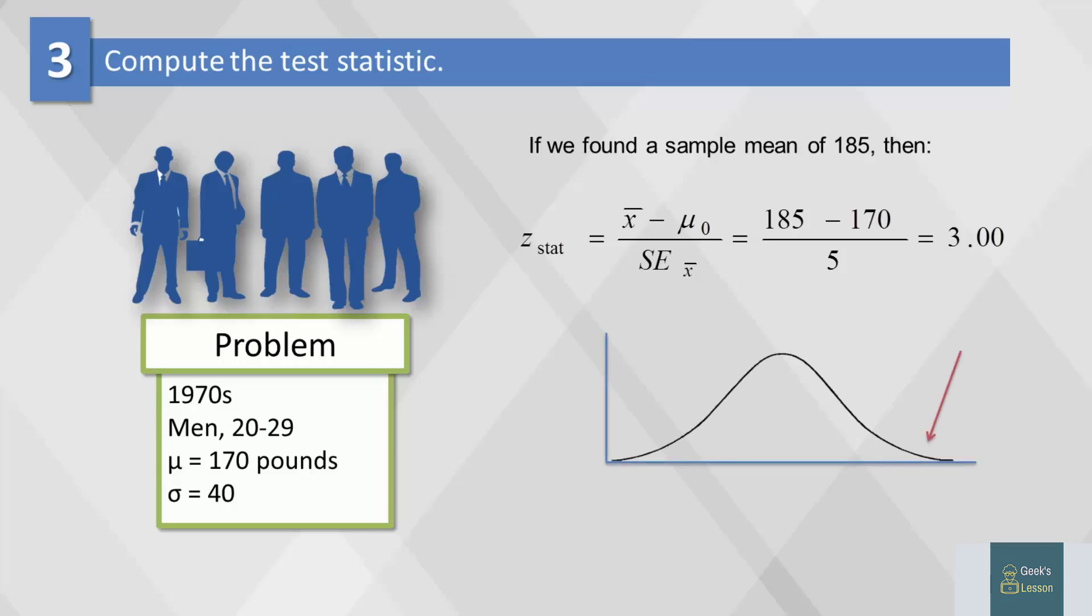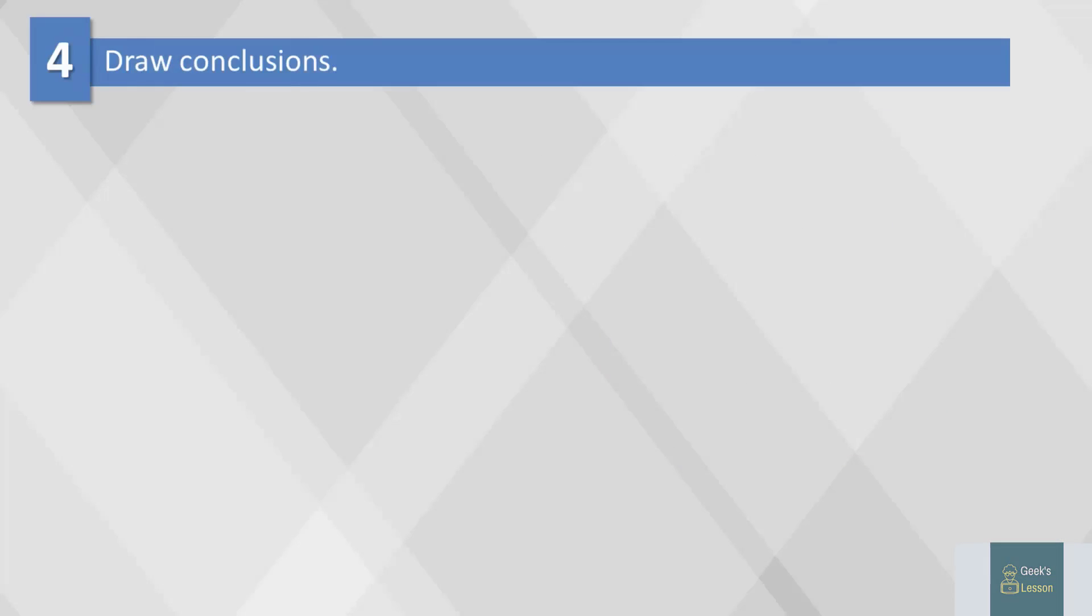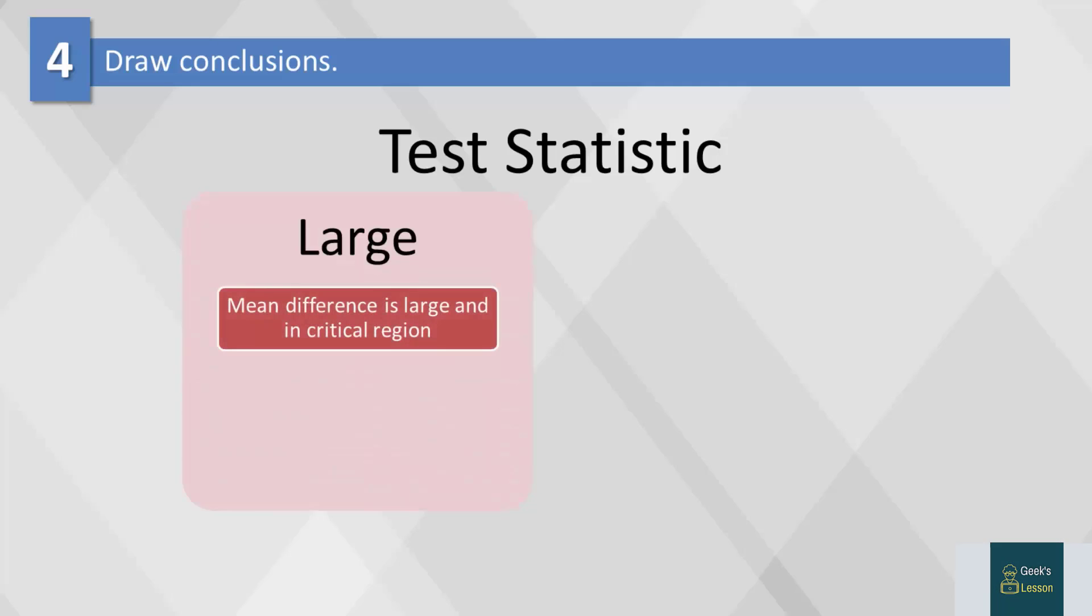The final step is drawing conclusions. Once we've computed the z-value of our test statistic, we have to look at the corresponding probability values to find out if it's reasonably close to the population mean. A large value shows that the obtained mean difference is large and in the critical region. The difference is significant, which means we have to reject the null hypothesis that the weights have not changed over time.